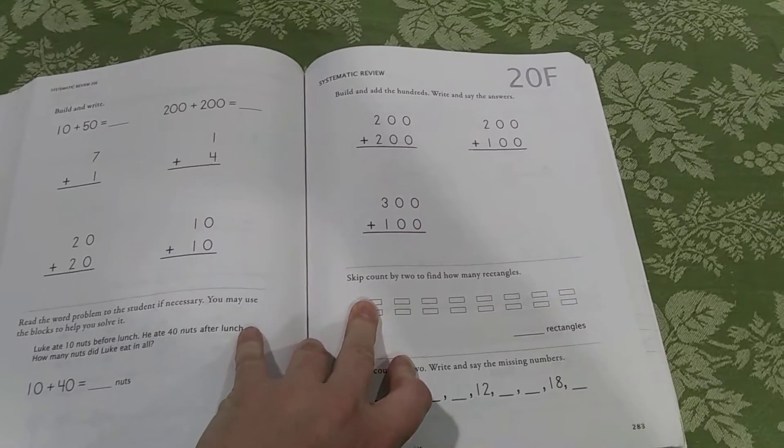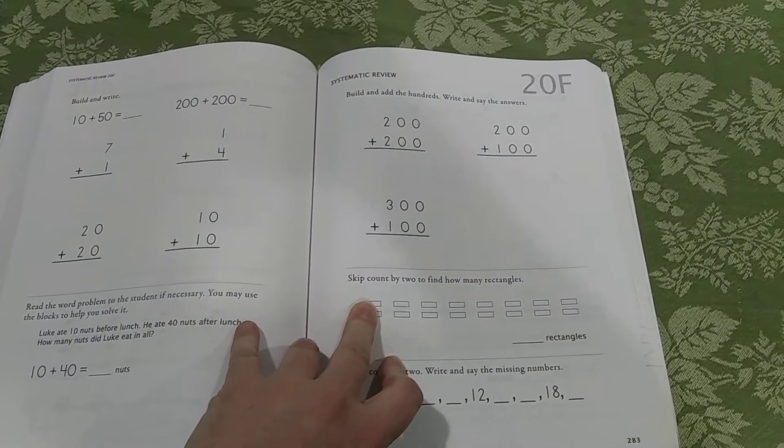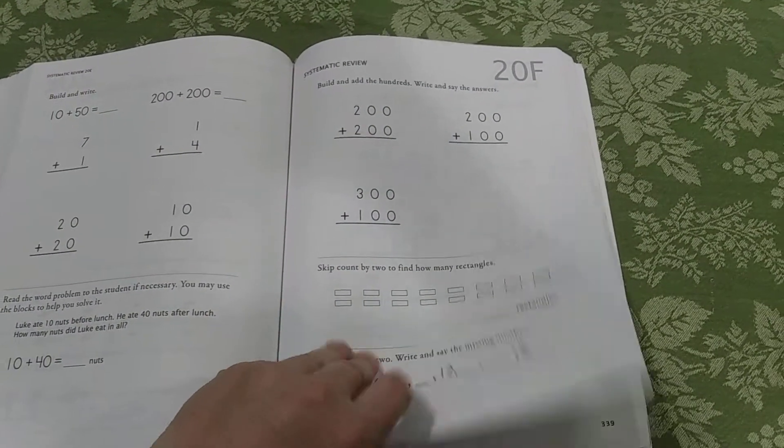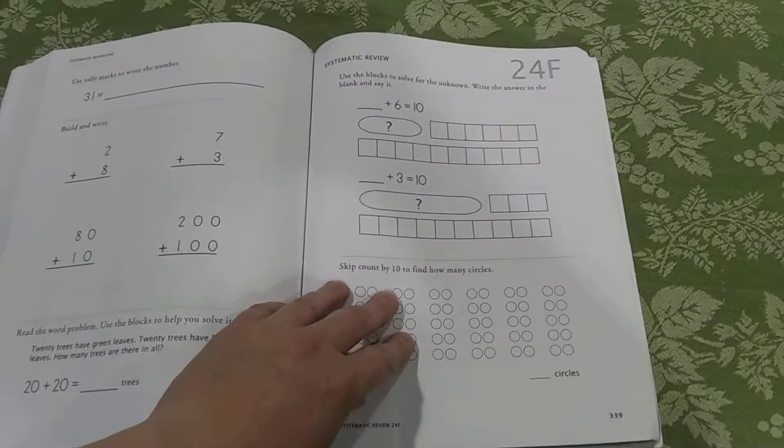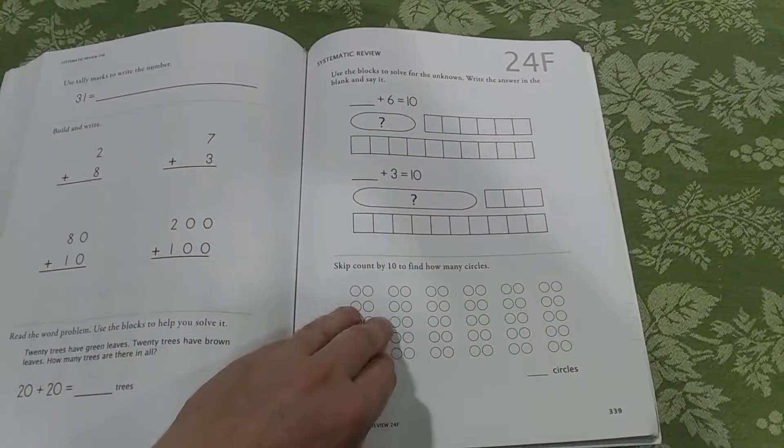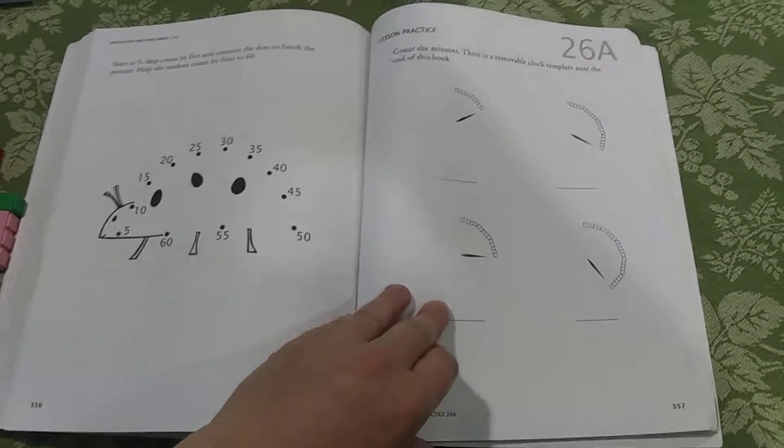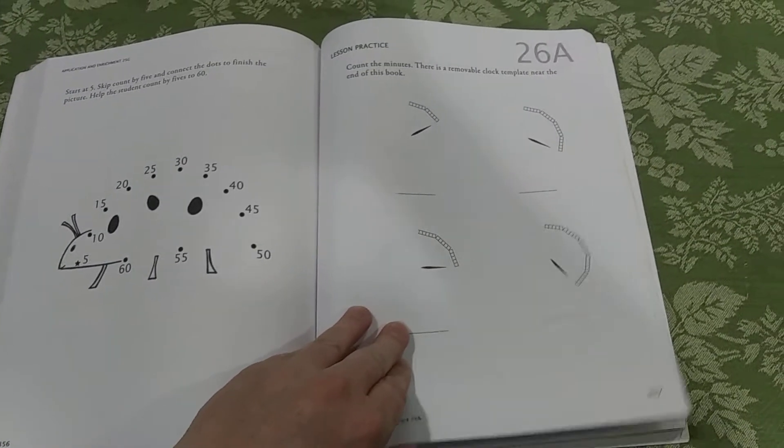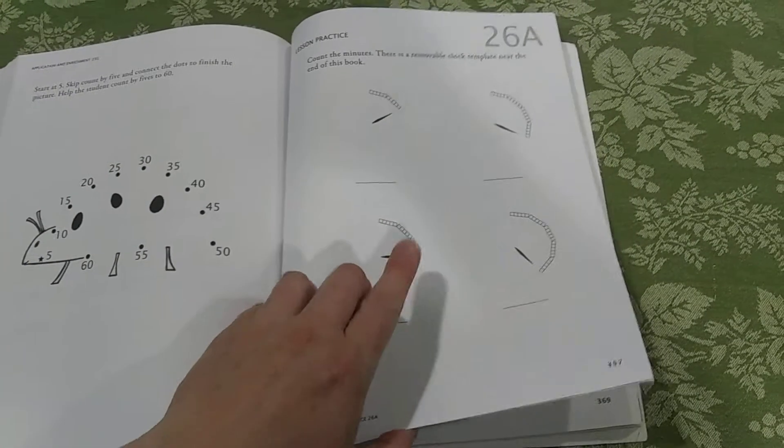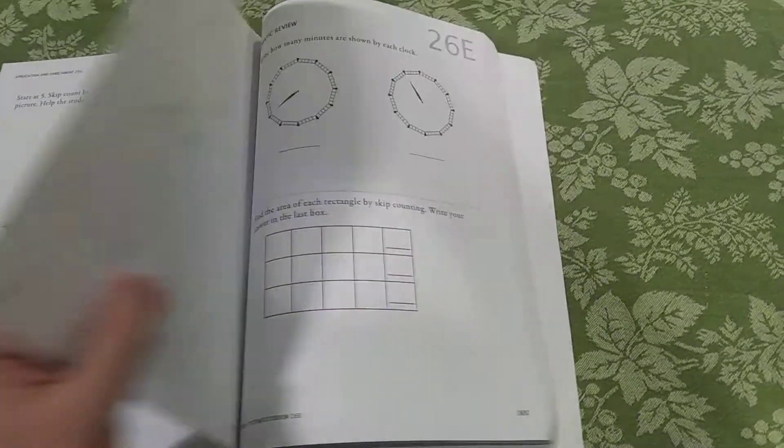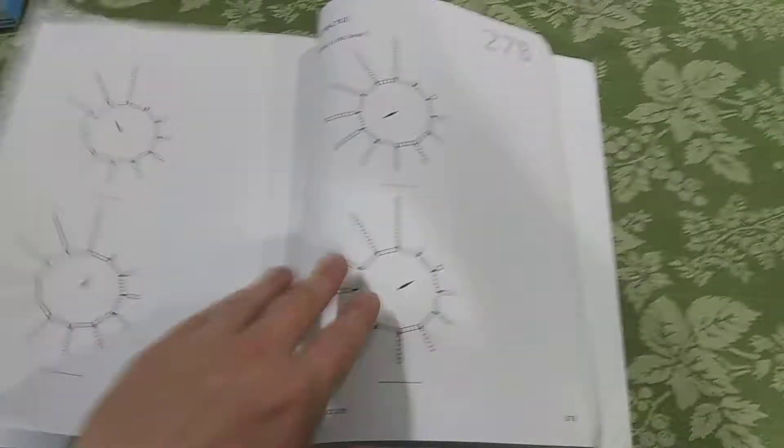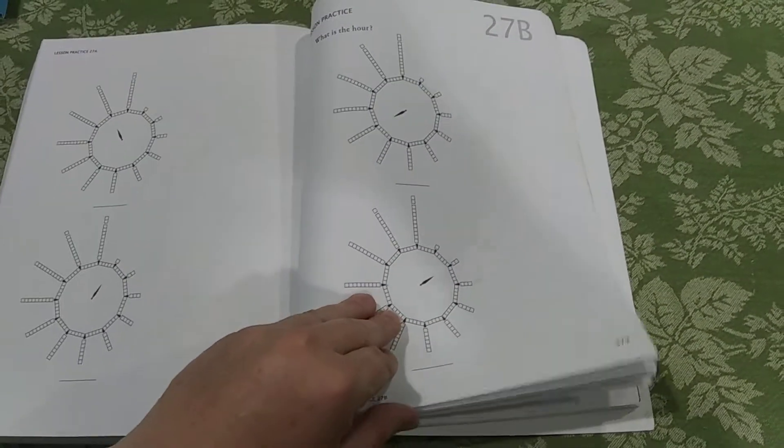In the end of this Primer book, they're going to be adding double digits and triple digits. They're going to be finding the missing number, counting by tens, and twos and fives, I believe. Here they're working on clocks, which they actually build the clock with the blocks, so they can count by fives, so this is really neat.